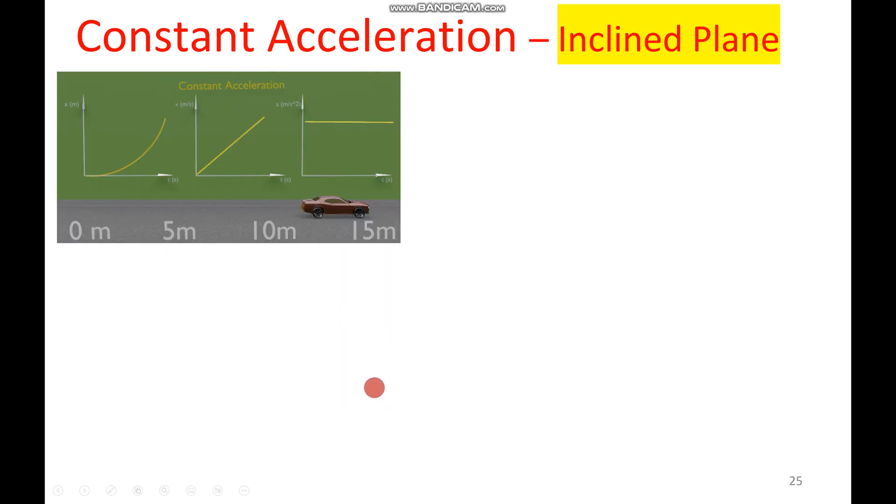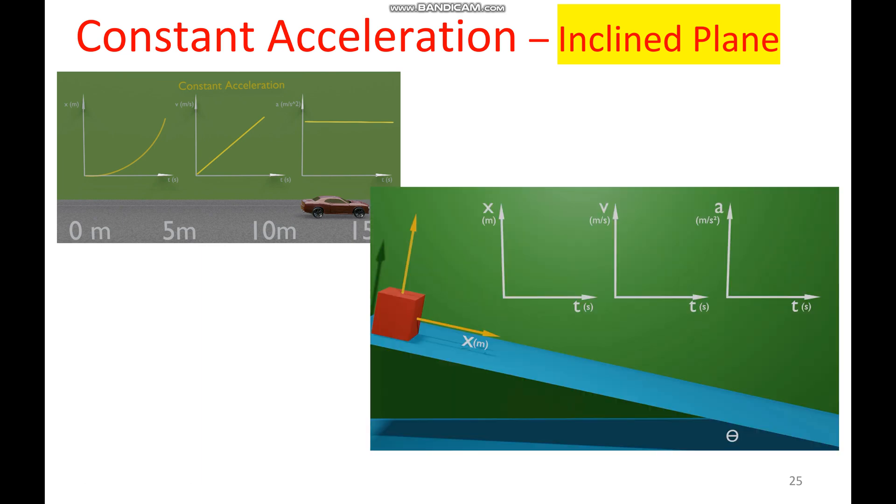Now, these graphs don't have to be just for cars or driving. They apply to any situation with the motion described. For example, the graphs for our constantly accelerating car would look exactly the same as this block sliding down a ramp. This is constant acceleration, so as the blocks slide down, our graphs will look exactly the same. Thank you guys!